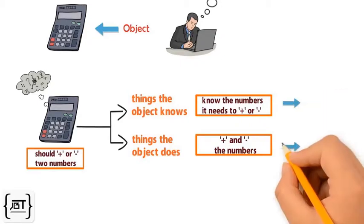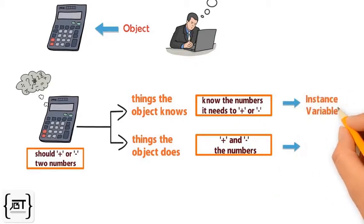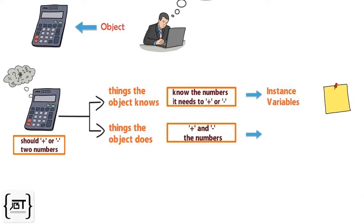Things an object knows about itself are called instance variables. They represent the state of the object. Things an object can do are called methods. They represent the behavior of the object.